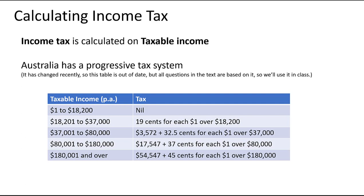If you're working in a part-time job or a very low-paid job, you'll probably earn less than $18,200 a year, which means you will pay no income tax. You might get some tax taken out during school holidays or busy periods, but because you're earning less than $18,200 per annum, you'll get that money back at the end of the financial year as a tax return.